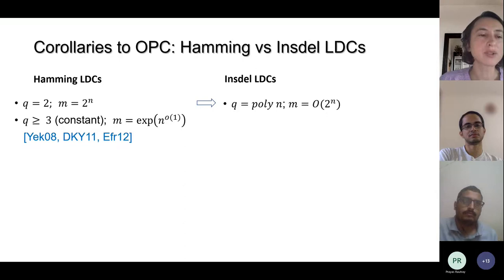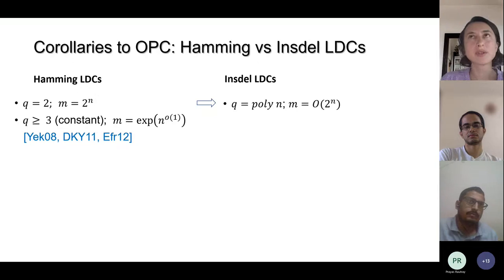For constant query complexity, we get no interesting implication from this transformation — and there's a question about whether there are lower bounds in that regime. That's exactly what one of our papers addresses.